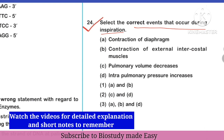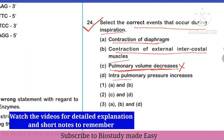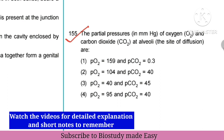Next question: select the correct events that occur during inspiration. Contraction of diaphragm — yes, diaphragm contracts. Contraction of external intercostal muscles — yes, they also contract. However, pulmonary volume decreases — this is wrong; during inspiration lungs expand, so volume increases, not decreases. Intra-pulmonary pressure increases is also wrong. So both A and B (diaphragm and external intercostal muscle contraction) are the correct events.